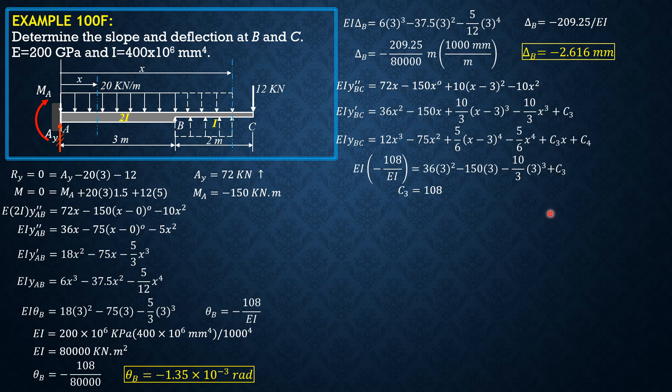Using boundary conditions at x equals 3 to find the integration constants. Solving for C sub 3, C sub 3 is equal to 108. Then using continuity of deflection at B, computing for C sub 4 in this equation, C sub 4 is equal to negative 114.75.